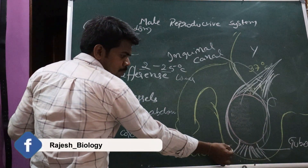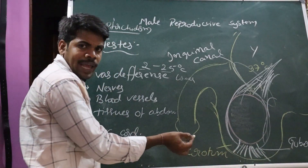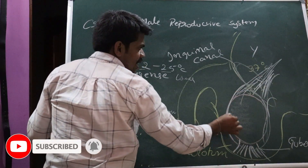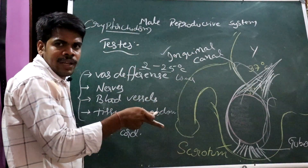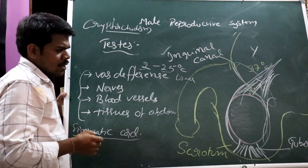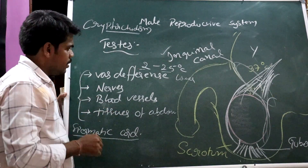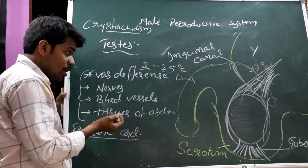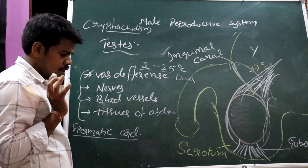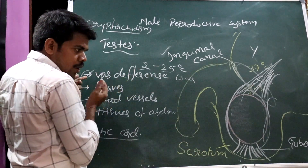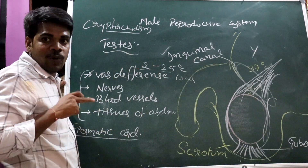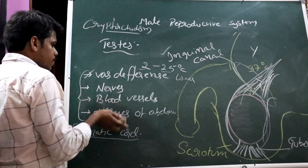The testes are attached to the bottom of the scrotal sac by a fibrous cord called the gubernaculum. The canal that communicates the abdominal cavity with the scrotal cavity is the inguinal canal, through which the spermatic cord — containing the vas deferens, nerves, blood vessels, and abdominal tissues — descends into the scrotum. Now let's take the testes out and examine its structure.